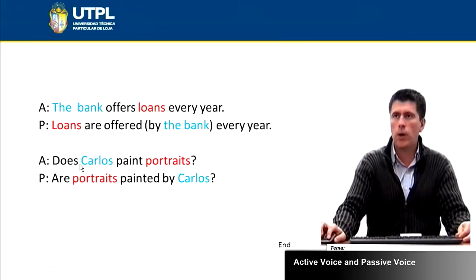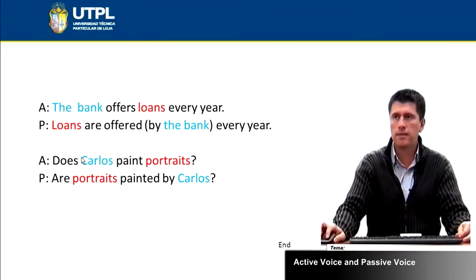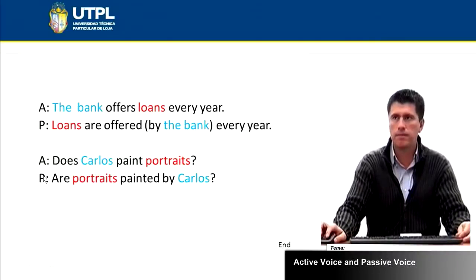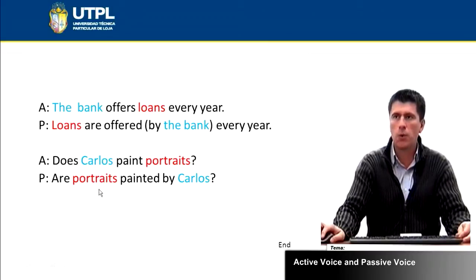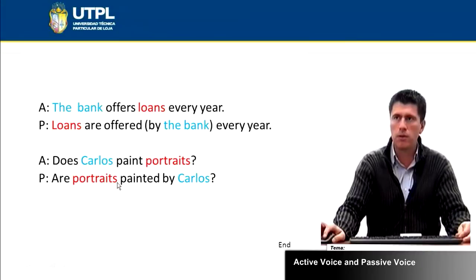Now let's look at this question in the active voice: 'Does Carlos paint portraits?' The auxiliary is does, the subject is Carlos, paint is the verb, and portraits is the object. To change this to the passive voice, we get rid of the auxiliary and make portraits the subject: 'Are portraits painted by Carlos?' I'm using are because the noun portraits is plural.